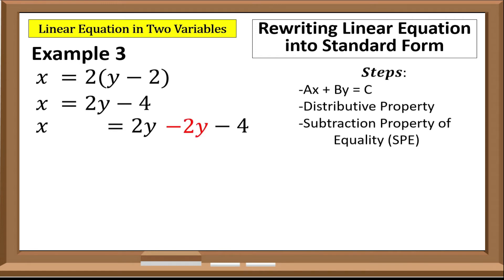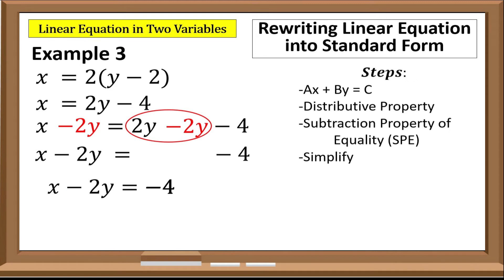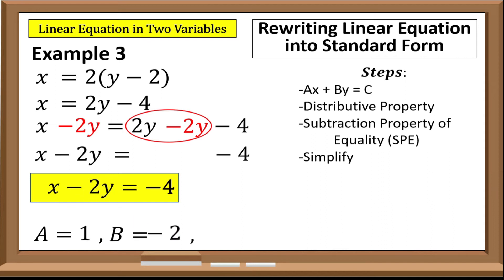Since we are using the SPE, we subtract 2y from both sides and simplify. The 2y on the right side is eliminated, so the new equation is x minus 2y equals negative 4. We can now identify the values: a is 1, b is negative 2, and c is negative 4. Take note: we only identify the numerical coefficient of the equation.